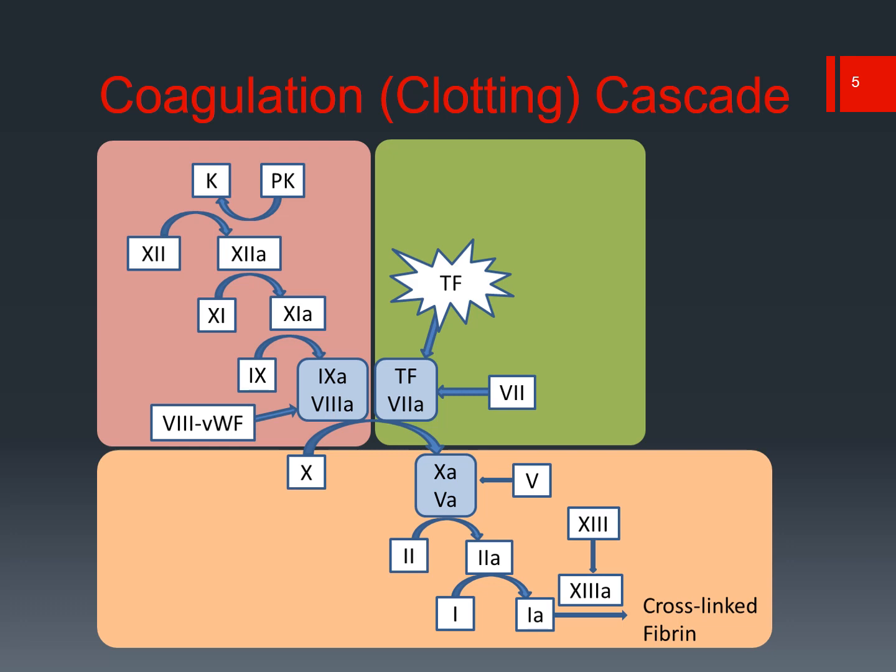Thrombin activates fibrinogen to fibrin, and then factor 13a will cross-link that fibrin into a solid clot. Through the extrinsic pathway — a one-step process to the common pathway — tissue factor is released from the subendothelial matrix, binds to self-activated 7a, activates 10 to 10a, and goes on to form a cross-linked fibrin strand.